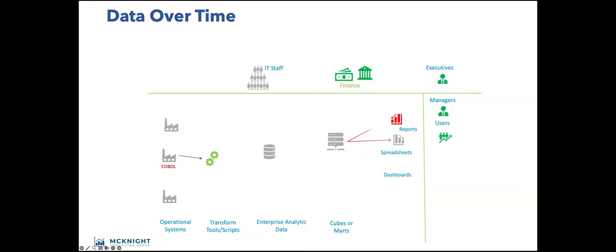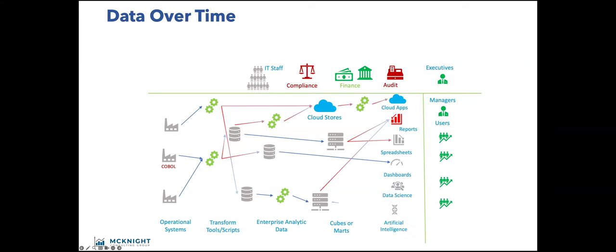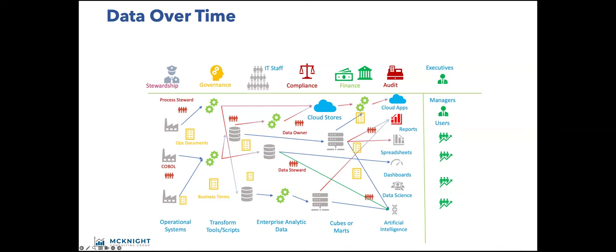Over time, data is going to move from A to B all over the place inside organizations. Most of you will look at the diagram I'm showing, which I'm saying is complicated, and say 'I wish my environment were that simple.' Things change over time, and across the top you see all the different parties interested in what's going on in the data architecture. Not many businesses have a good handle on this, and the cost is very high. I don't think many companies would blink if I reference spaghetti architecture, because they totally relate.